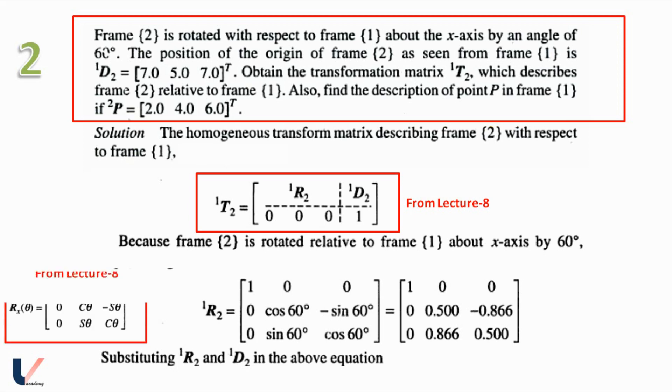From lecture number 8 we know that the rotation about the x-axis matrix is given by 1, 0, 0, 0 cos theta minus sin theta, 0 sin theta cos theta. Substituting 60 degrees in this matrix we will get the value of 1R2 as shown here.